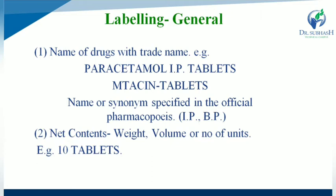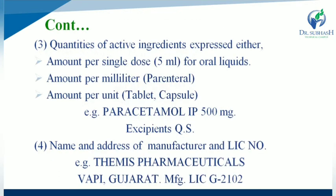The second requirement is net content. The drug name must be mentioned on all labels, along with net content — meaning weight, volume, or number of units. In case of solid dosage form, that is weight, for example 10 tablets. Also, quantities of active ingredient expressed as amount per single dose (around 5 ml for oral preparations), amount per ml for parenteral dosage forms, and amount per unit for tablets and capsules.